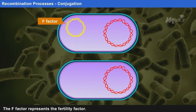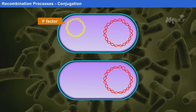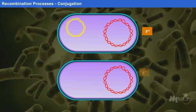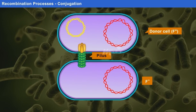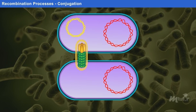This F-factor indicates the fertility factor. Strains of bacteria having the F-factor are called F-plus cells while those without it are called F-minus cells. A donor cell, that is, the F-plus cell, creates a structure called a pilus to link with the recipient cell. As a result, there exists a cytoplasmic bridge between the two bacterial cells.